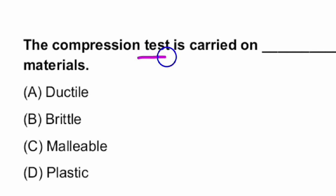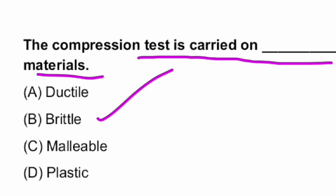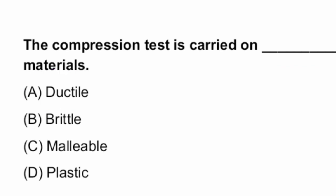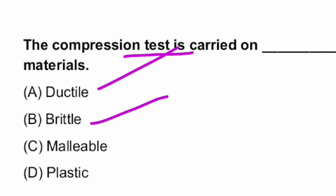The compression test is carried on brittle materials, whereas the tensile test is carried on ductile materials. The compression test is carried out on a UTM machine — compression test for brittle materials, whereas tensile test for ductile materials.